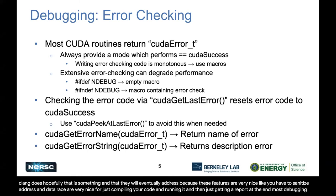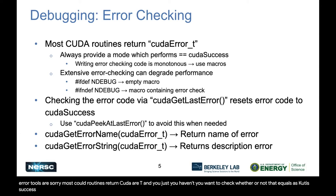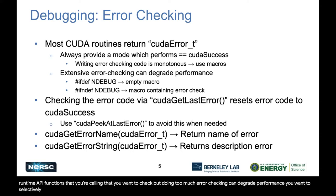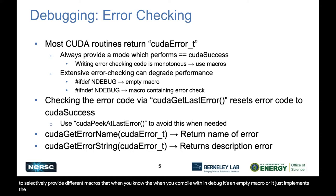Most CUDA routines return cudaError_t, and you want to check whether or not that equals cudaSuccess. Writing error code checking is monotonous, so it's highly recommended to use macros to easily wrap these runtime API functions that you're calling and want to check. But doing too much error checking can degrade performance. You want to selectively provide different macros that, when you compile in release mode, it's an empty macro or just implements the actual function call, and in debug mode it actually does the error checking.